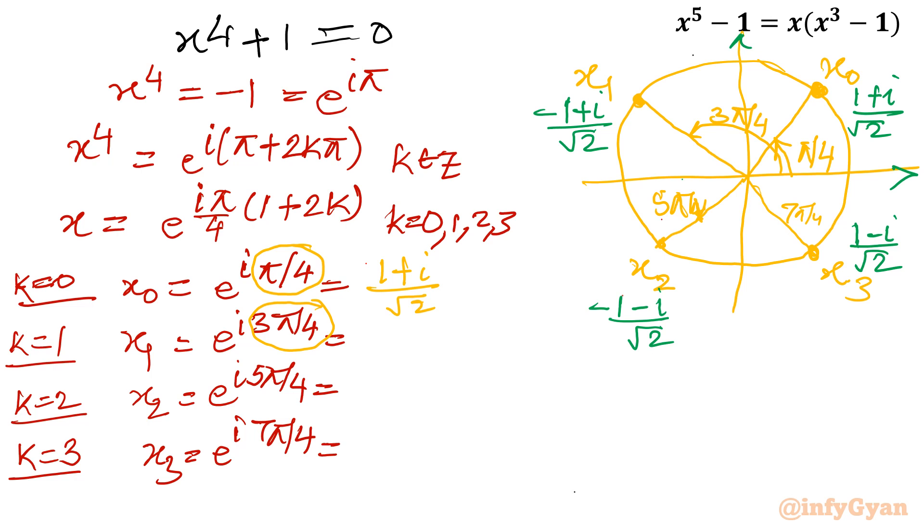So I can write e^(i3π/4), that is second quadrant value, so (-1 + i)/√2. Third quadrant value: (-1 - i)/√2. Fourth quadrant value: (1 - i)/√2. See, these are our final solutions. I hope you like this video. Thank you so much for watching. Do not forget to like, share and subscribe. Bye-bye till next video.